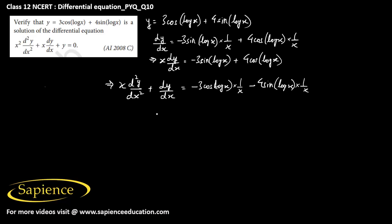So if we multiply both sides with x, then we get x square d square y by dx square plus x dy by dx equals minus 3 cos of log x plus 4 sine of log x.